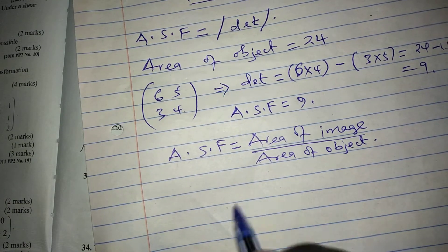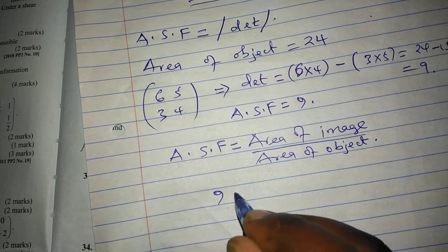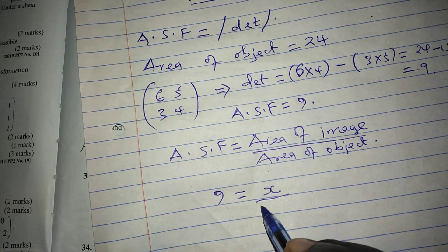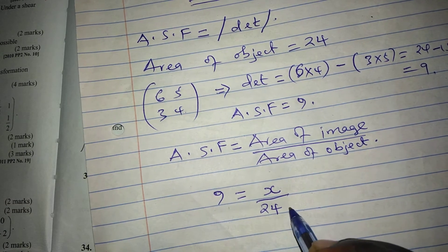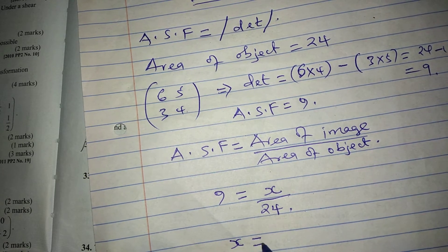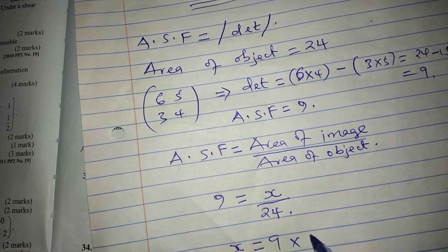So this means we can say that area scale factor, which is already 9, is given by the unknown image area divided by the known object area. So cross-multiplying, x will be provided by 9 times 24.